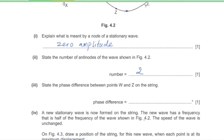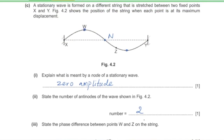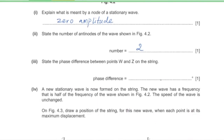Part 3: state the phase difference between points W and Z. The phase difference between two points on a stationary wave equals the number of nodes between them multiplied by 180°. There is one node between W and Z, so the phase difference is 180°.